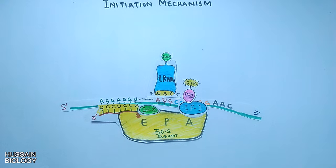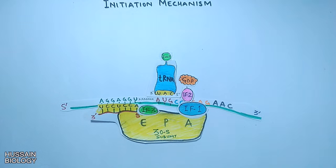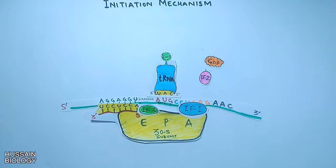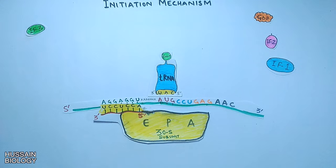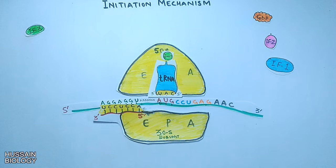After all the recruits and bindings, GTP is hydrolyzed into GDP and Pi, giving GDP-bound IF2. In the next step, all the factors — GDP-IF2, IF1, and IF3 — leave the complex, making room for the 50S subunit to join. As shown in the animation, the 50S subunit comes in and completes the translation initiation complex, after which elongation occurs.